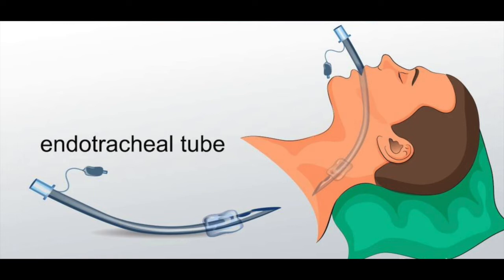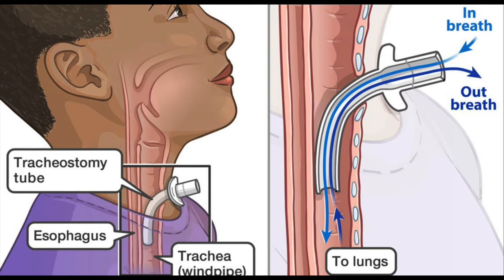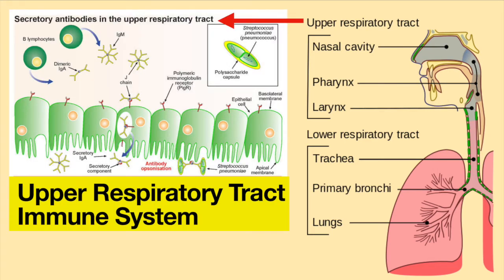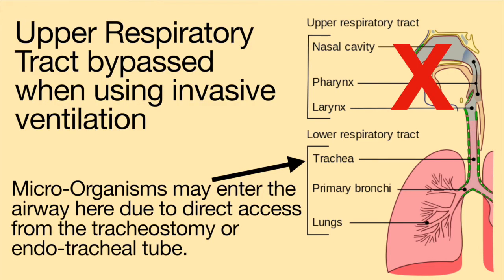One of the biggest drawbacks with invasive ventilation is that it requires either an endotracheal tube placed through the nose or mouth, or a tracheostomy tube surgically placed into the neck. Having an in-dwelling device means there is an increased risk for infection. Additionally, using invasive ventilation means the upper airways are bypassed, which provide valuable protection against many illnesses, so microorganisms may have direct access to the lower airways.